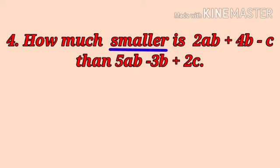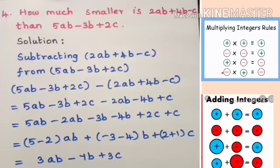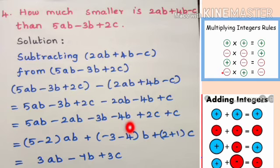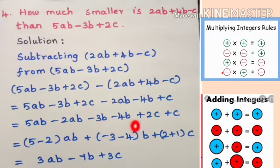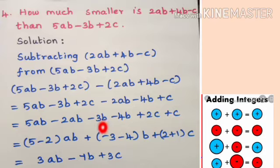In this question, the difference between the two expressions 2ab plus 4b minus c and 5ab minus 3b plus 2c is found by subtracting or adding the coefficients of like terms. So 5 minus 2 gives 3ab; minus 3 minus 4 gives minus 7b (using the addition rule: same-sign integers give the same sign); and 2 plus 1 gives 3c. Thus we get 3ab minus 7b plus 3c.